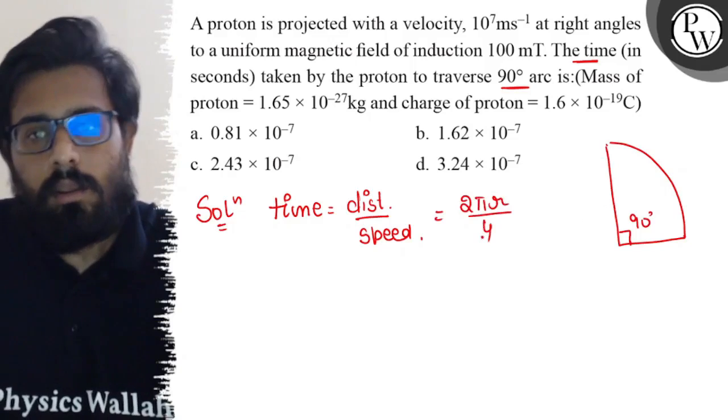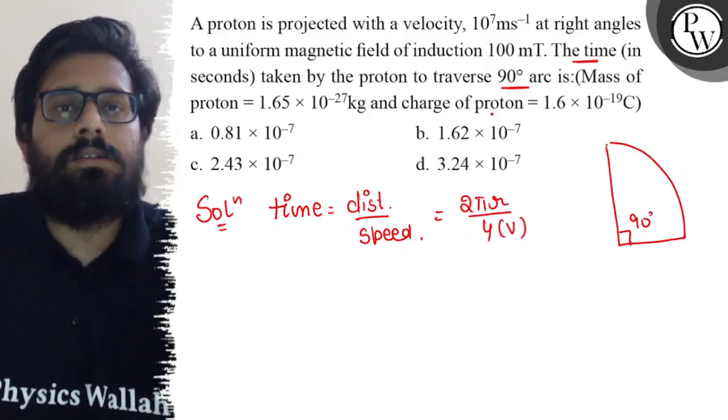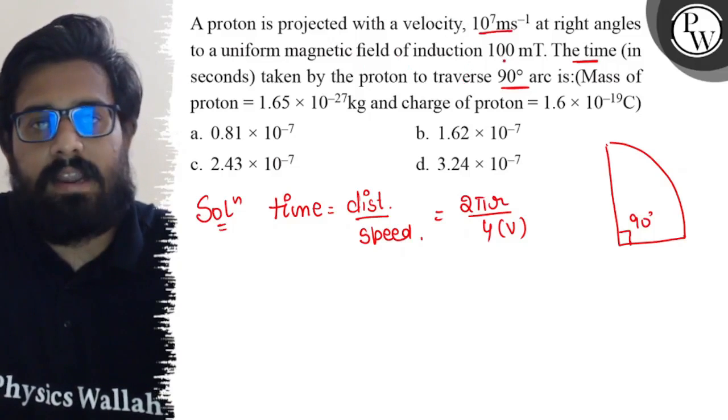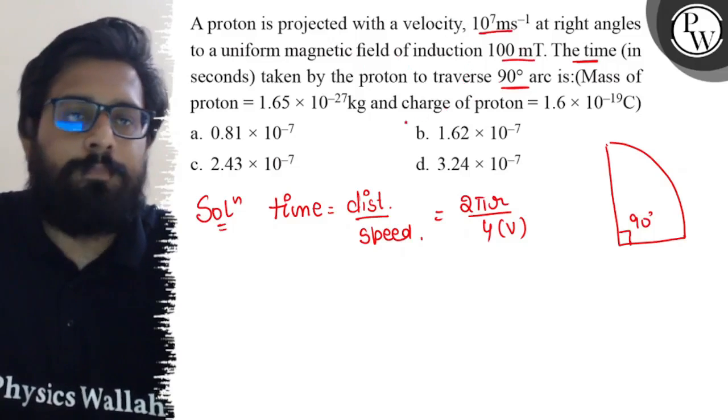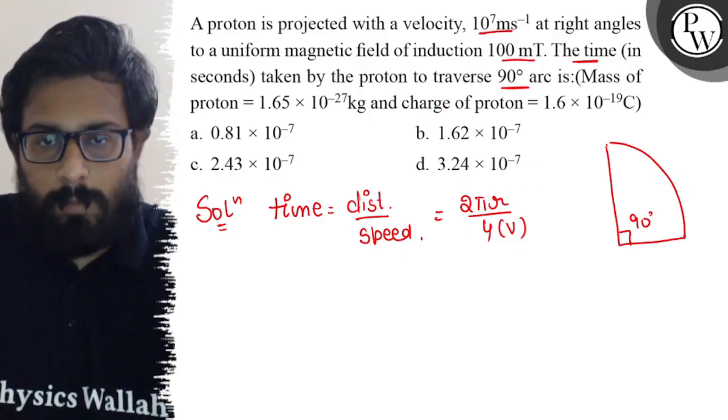So now what are the given data? We have the velocity, we have the magnetic field induction, we have the mass and the charge. Now what about the r?